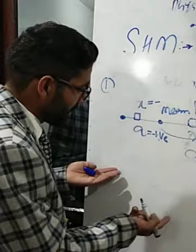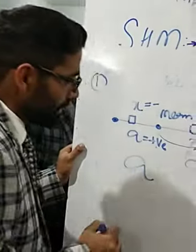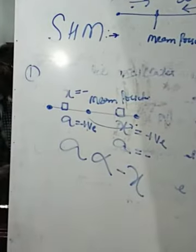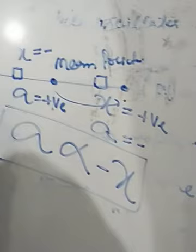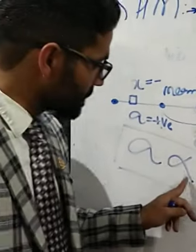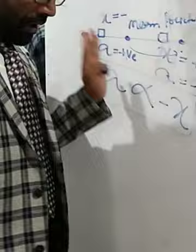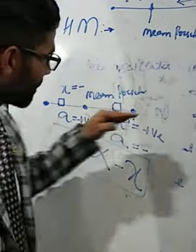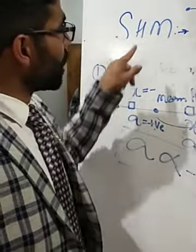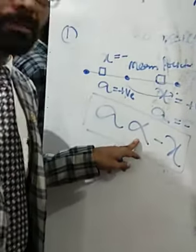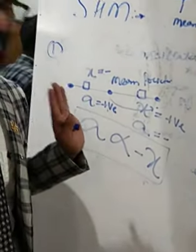That definition is: at any point, if acceleration is directly proportional to displacement but with a negative sign, then you can call that motion simple harmonic. Simple harmonic motion is a special type of oscillatory motion where the particle oscillates on the same line, acceleration is always directed towards the mean position, and the magnitude of acceleration is directly proportional to displacement but with a negative sign.